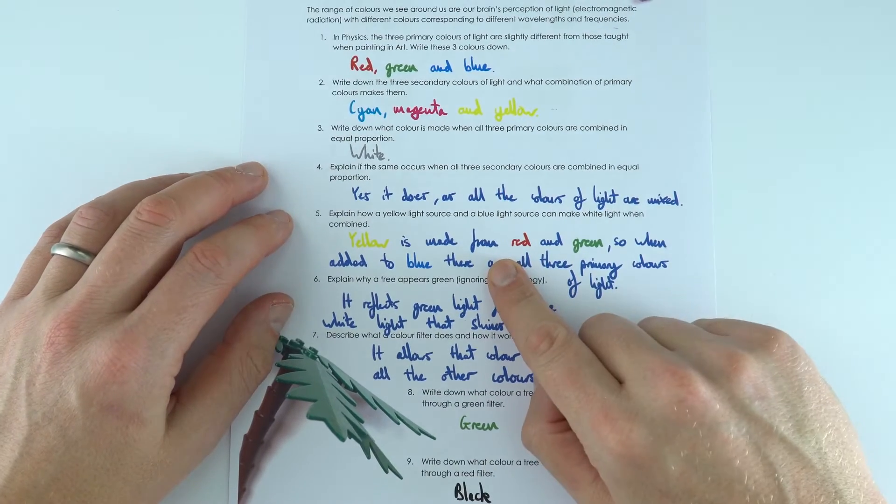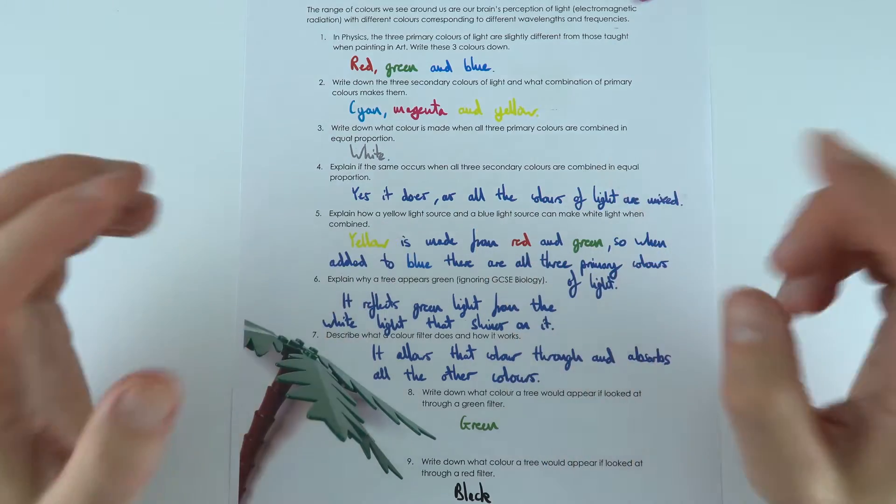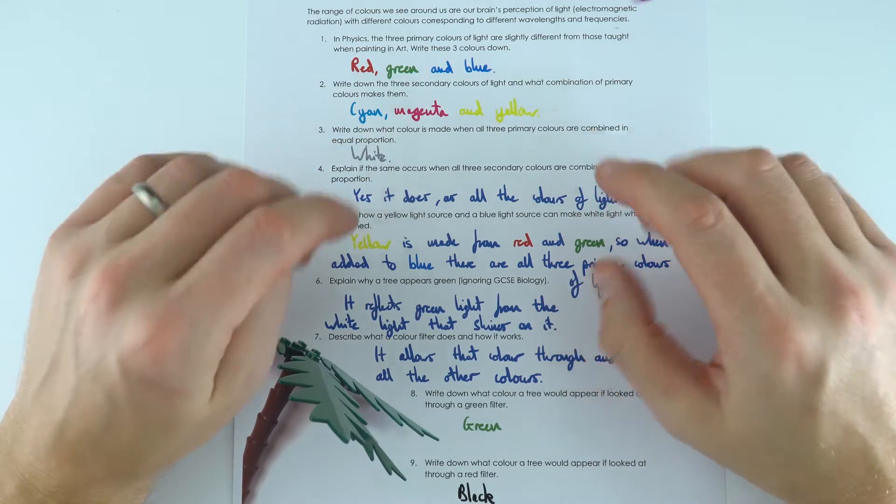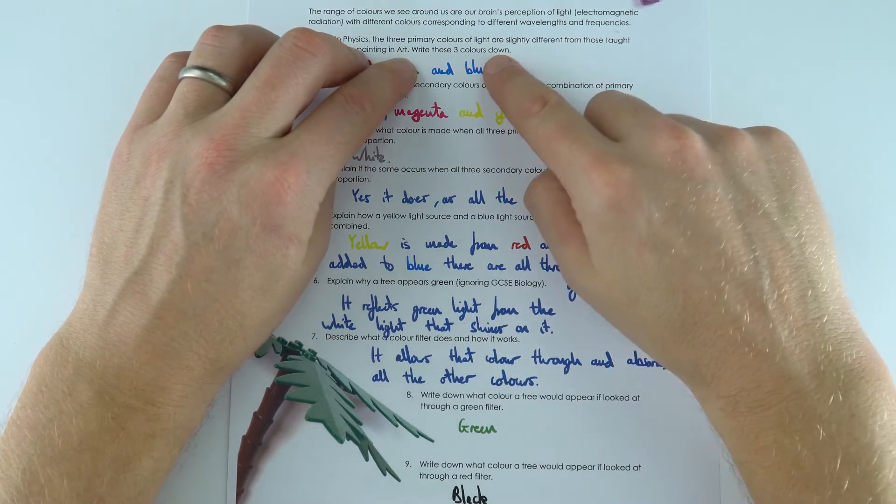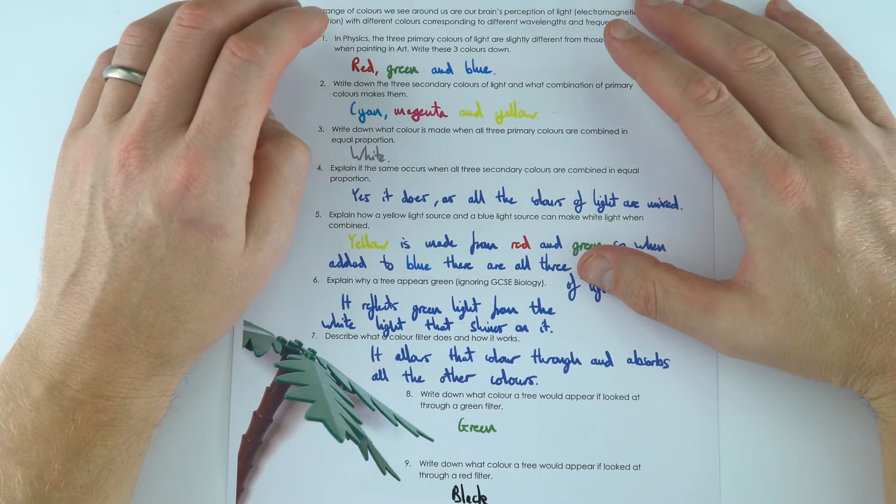This one over here: can you make white light with a yellow light source and a blue light source? This is different to mixing paint. Yellow paint and blue paint make green paint, but yellow light is made out of red and green, and then we add that to the blue and that means we've now got the three primary colours of light, so again we can get white light.